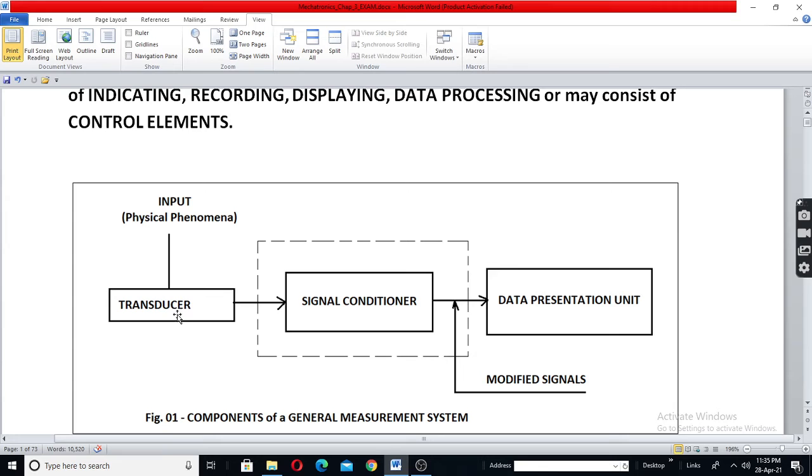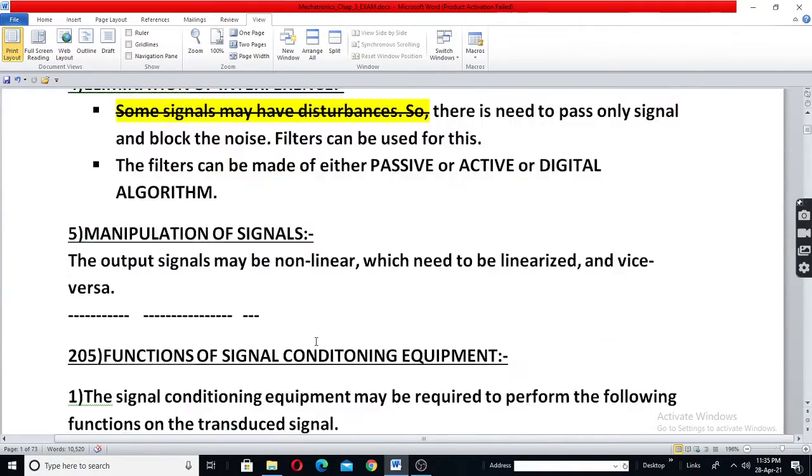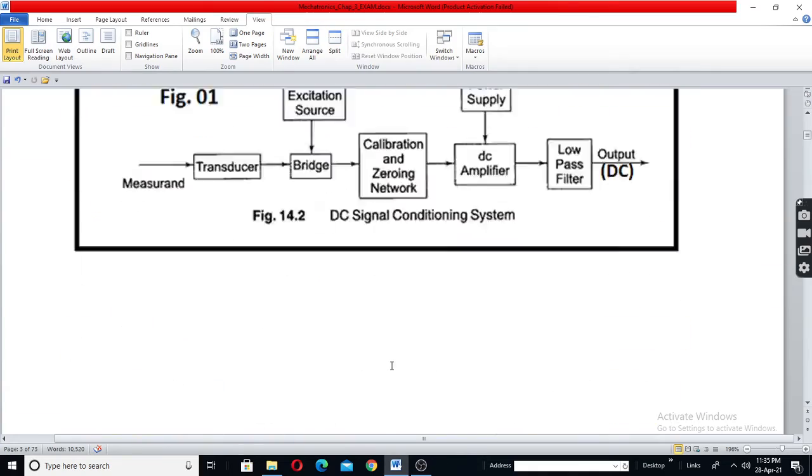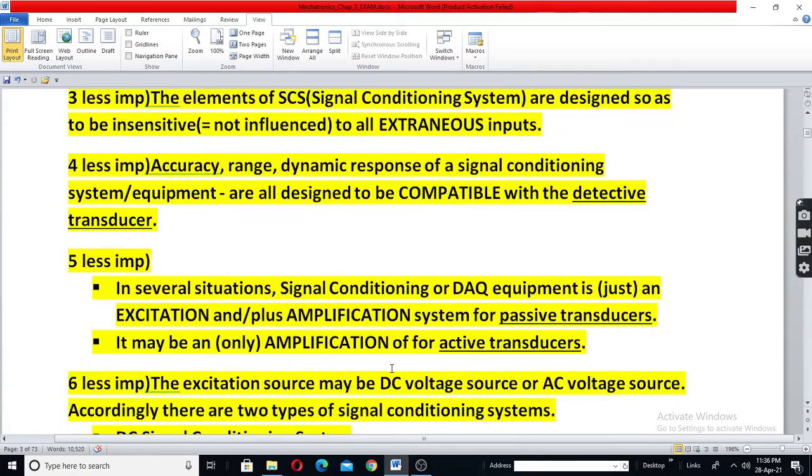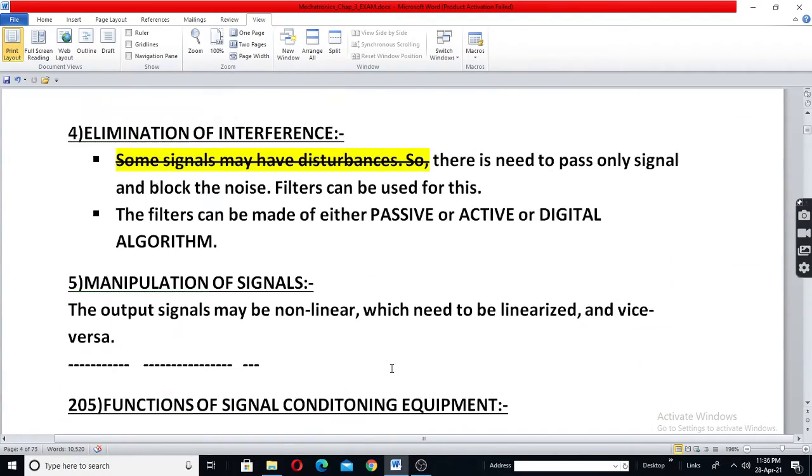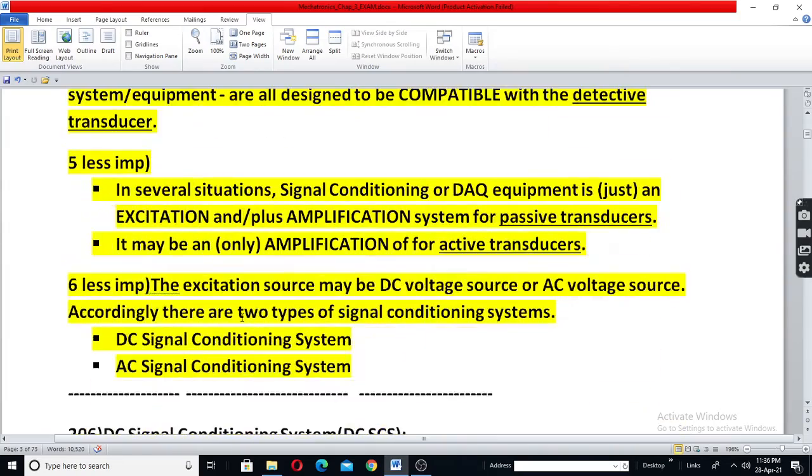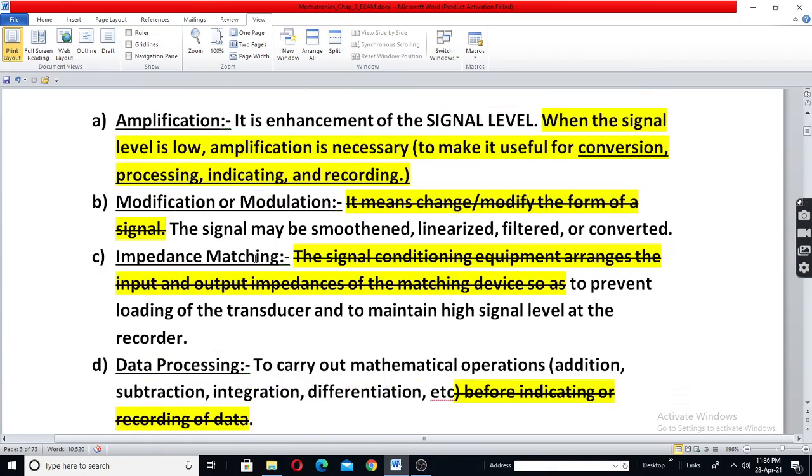You need to send, transmit the signal from here to there. So while traveling from here to there itself, there will be loss. So sometimes the signal conditioning equipment will simply do the transmission from one place to another place without loss of data means without distortion. So transmission, sometimes transmission, that also is necessary.